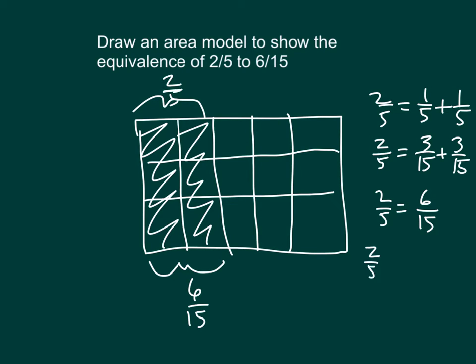We could write that as the sum of those unit fractions. And, in doing so, we know that it is 6 of those unit fractions times 1 fifteenth. So, we did draw that area model to show this equivalence — that 2 fifths does equal 6 fifteenths. That area is the same.